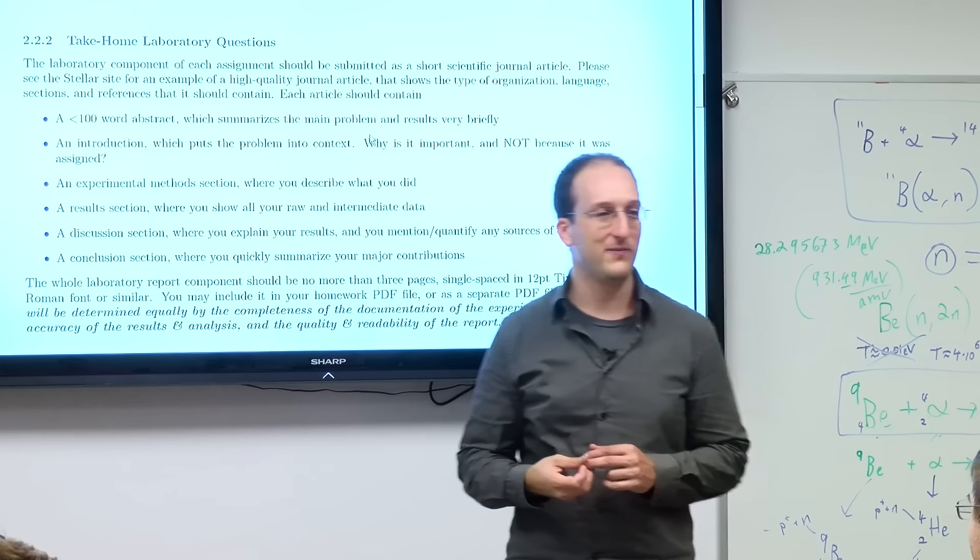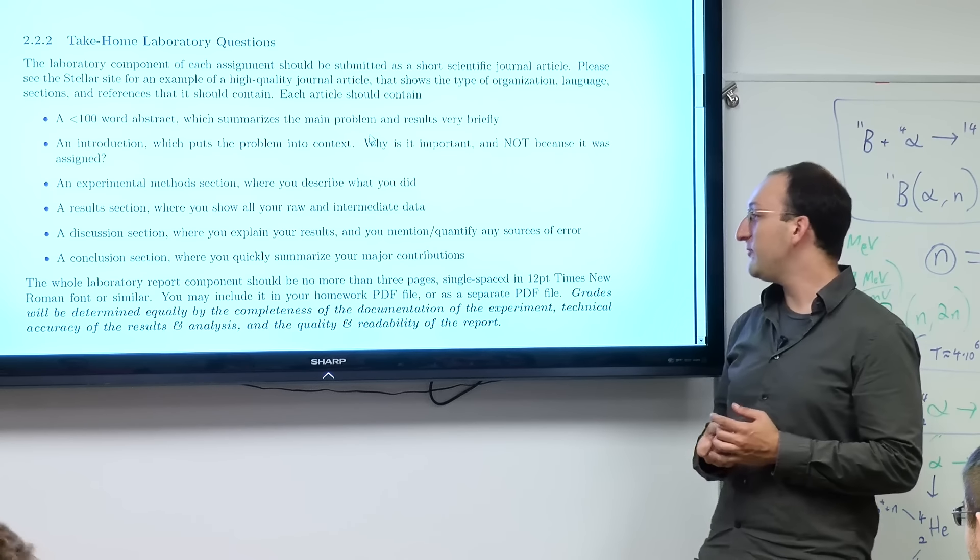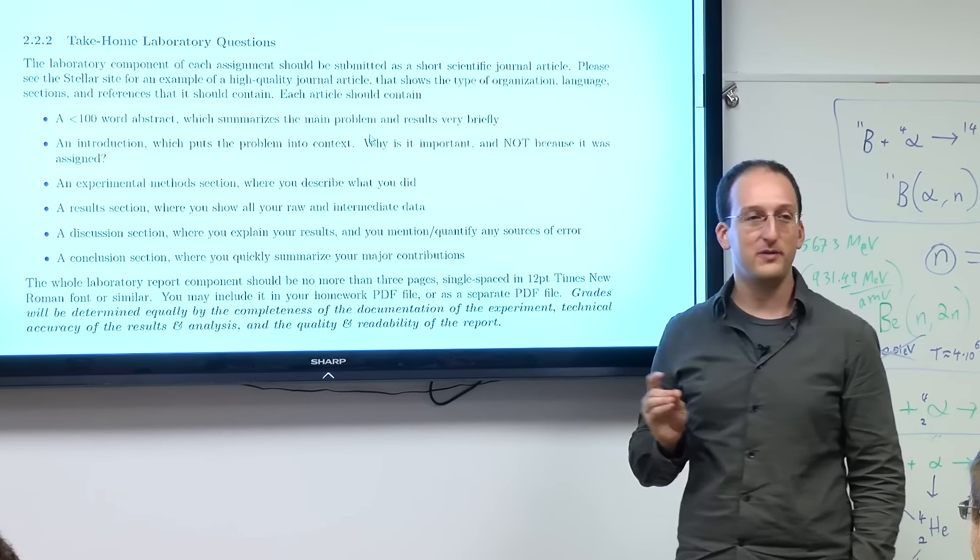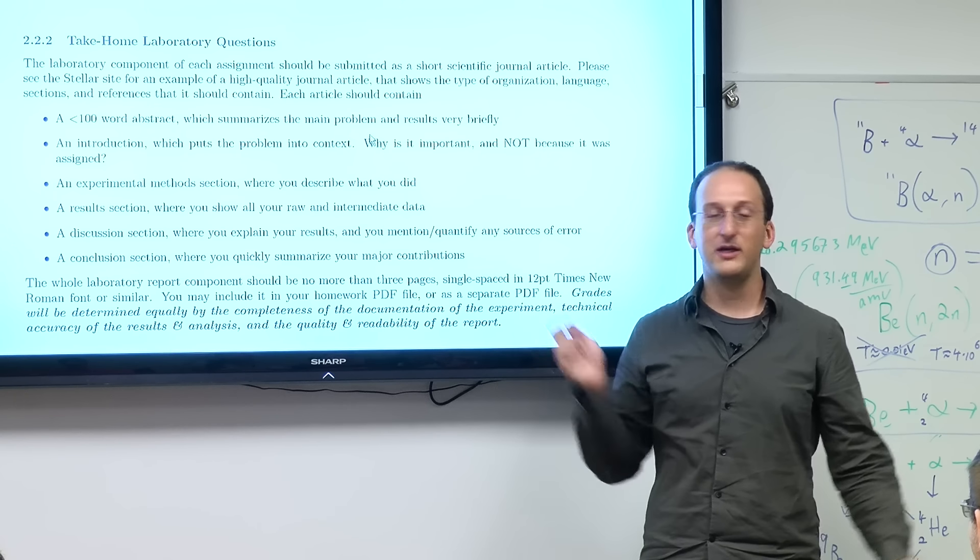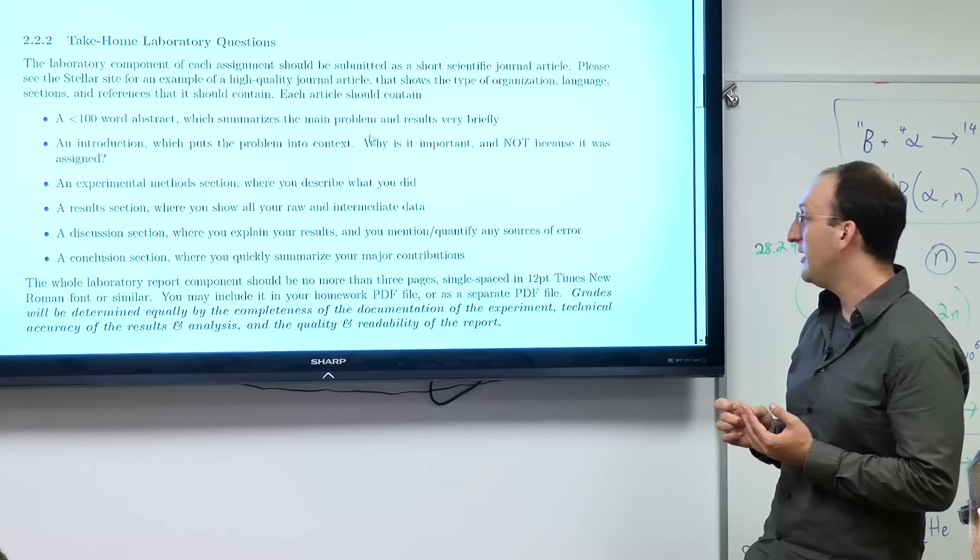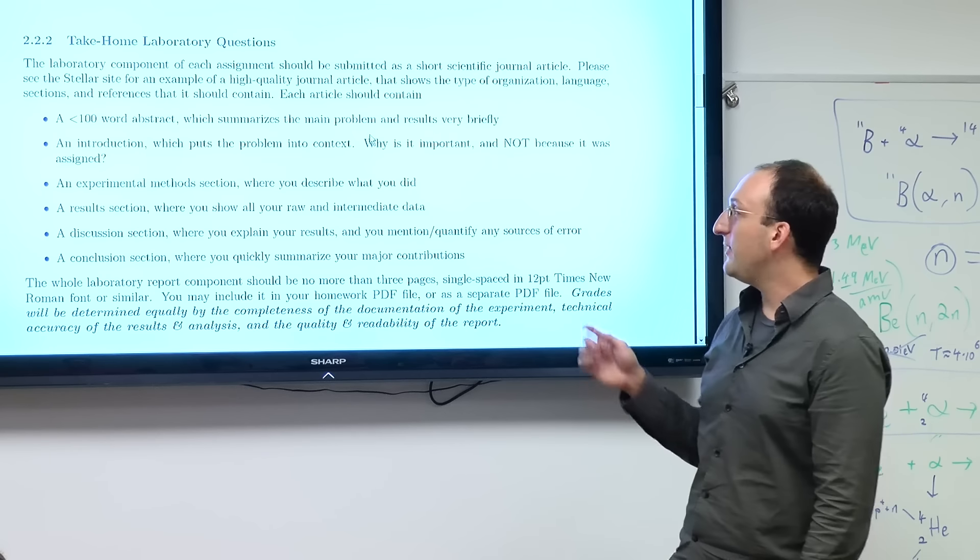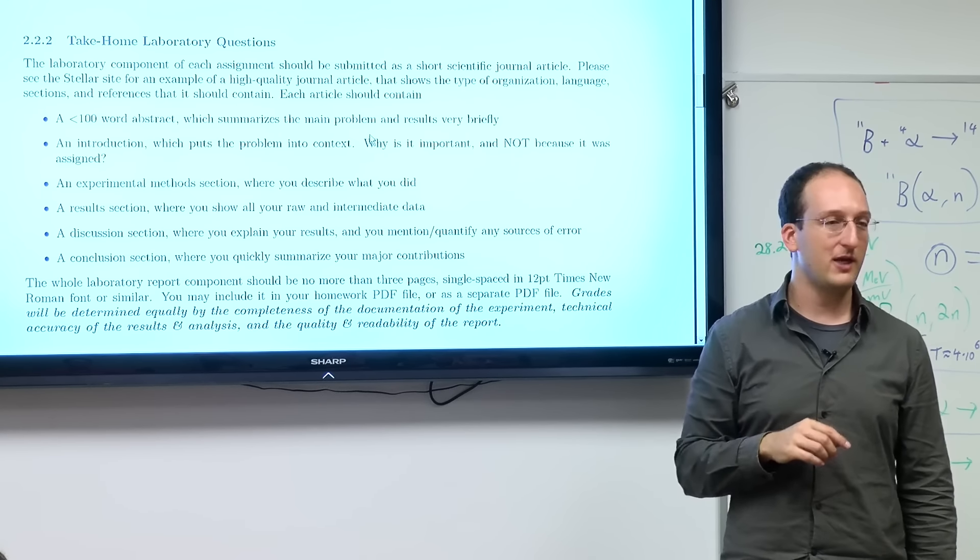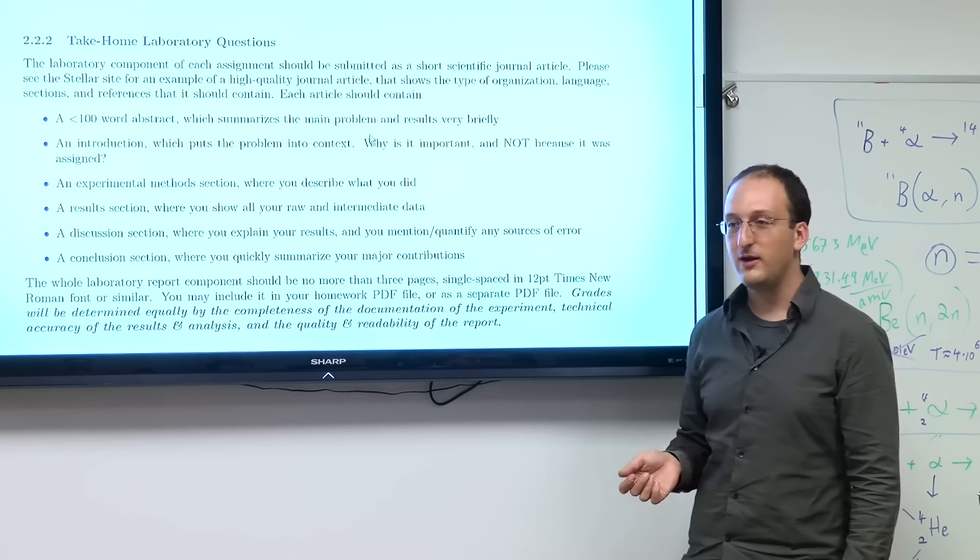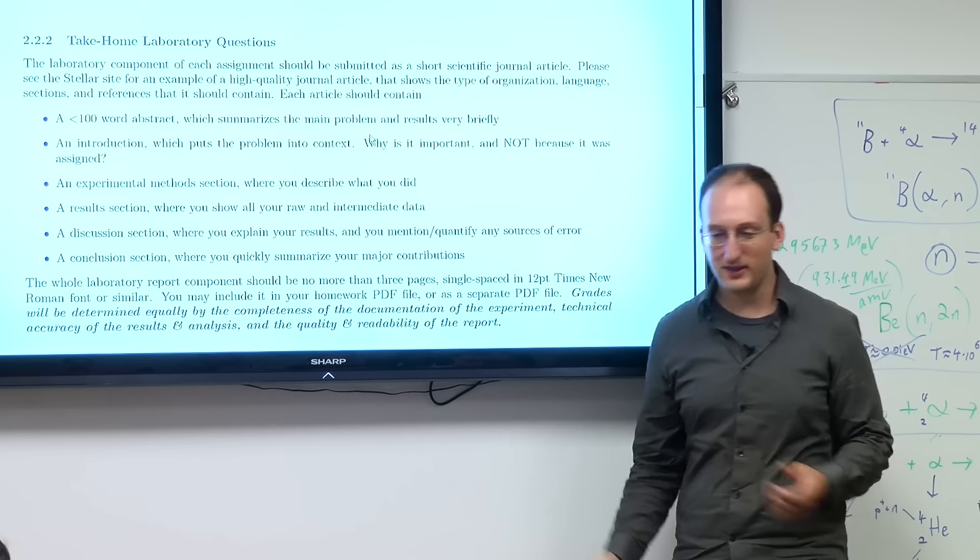Somebody found that beryllium bombarded by alpha particles emitted radiation of great penetrating power. That's the result. The interpretation or discussion said it's probably a Compton-like effect from a photon. By separating your results and discussion, you allow people to mentally say, I get your results, I believe you found these numbers, I have a different explanation. You all may have different explanations for what you see in your own labs because you're probably going to get different results. And then finally, a conclusion where you quickly re-summarize your major contributions. Your abstract's the teaser; your conclusion is like your re-abstract with the context that people now believe or don't what you did.